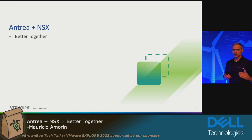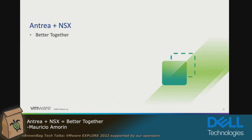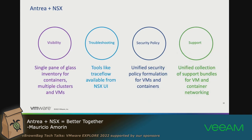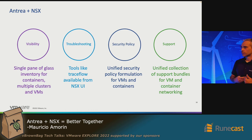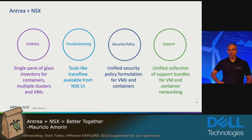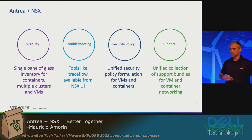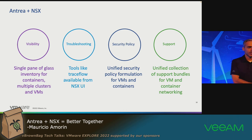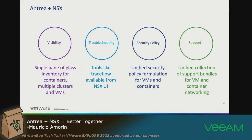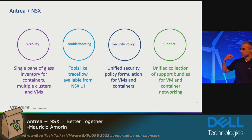What you achieve is full visibility — a single pane of glass for inventory of your containers. You will see all pods, all clusters, both your Kubernetes workloads and your VMs. You will have troubleshooting tools like Traceflow, which is very useful inside NSX for VMs and will now also work inside your Kubernetes cluster. You will have unified security policy formulation inside NSX, and you will have support where VMware can create a support bundle and help you inside that Kubernetes cluster.